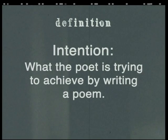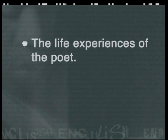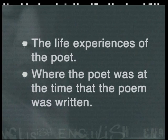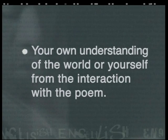This brings us to the next interesting aspect of poetry. What the poet is trying to do with a poem is known as intention. The poet's intention is what he or she is trying to achieve by writing a poem. In a way, it seems pretentious to imagine that any person can determine the poet's intention. However, every poem conveys a message. So here are some clues that will help you when you are trying to determine the poet's intention: think about the life experiences of the poet, where the poet was at the time the poem was written, and your own understanding of the world from the interaction with the poem. We have already shown you an example of hyperbole in the poem City Johannesburg.